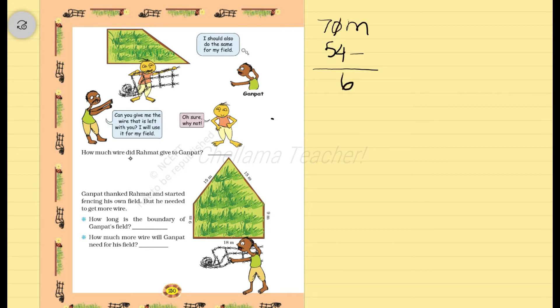So, 0, we can't subtract 4 from 0. So borrow from the 10th place number. So this 7 will become 6. 1 will be given here. This will become 10. 10 minus 4 is 6. 6 minus 5 is 1. So 16 meter is the left over from Rahmat which is given to Ganpag.